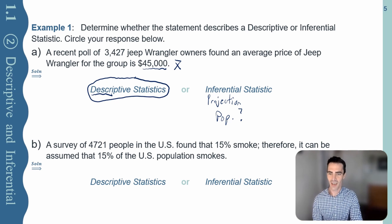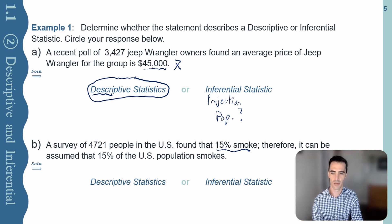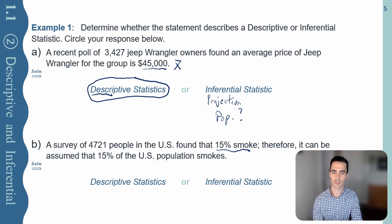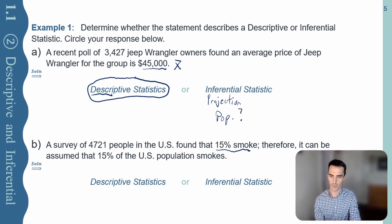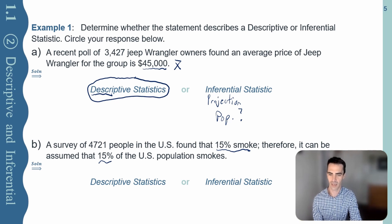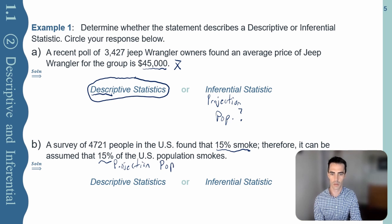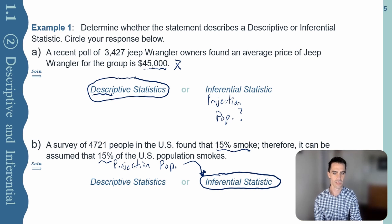Next one: a survey of 4,721 people in the United States found that 15% smoked — that's 15% of the 4,721. Therefore, it can be assumed that 15% of the U.S. population smokes. Depending on what they're asking, they're ending with this projection onto all U.S. population. That's a projection onto the population — that leads us right into inferential statistics.